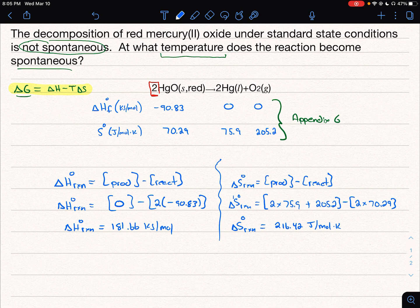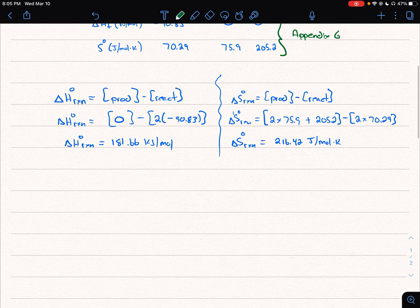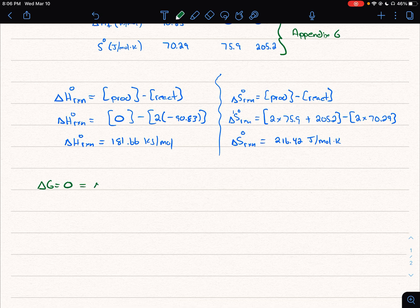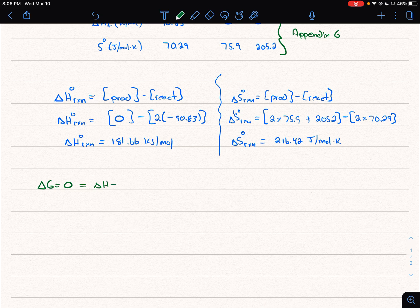And the way we're going to find this is, we're going to set delta G equal to zero, because at the point delta G equals zero, will be the point where we switch from being a non-spontaneous to a spontaneous reaction. And so delta G equals zero, which equals delta H minus T delta S.